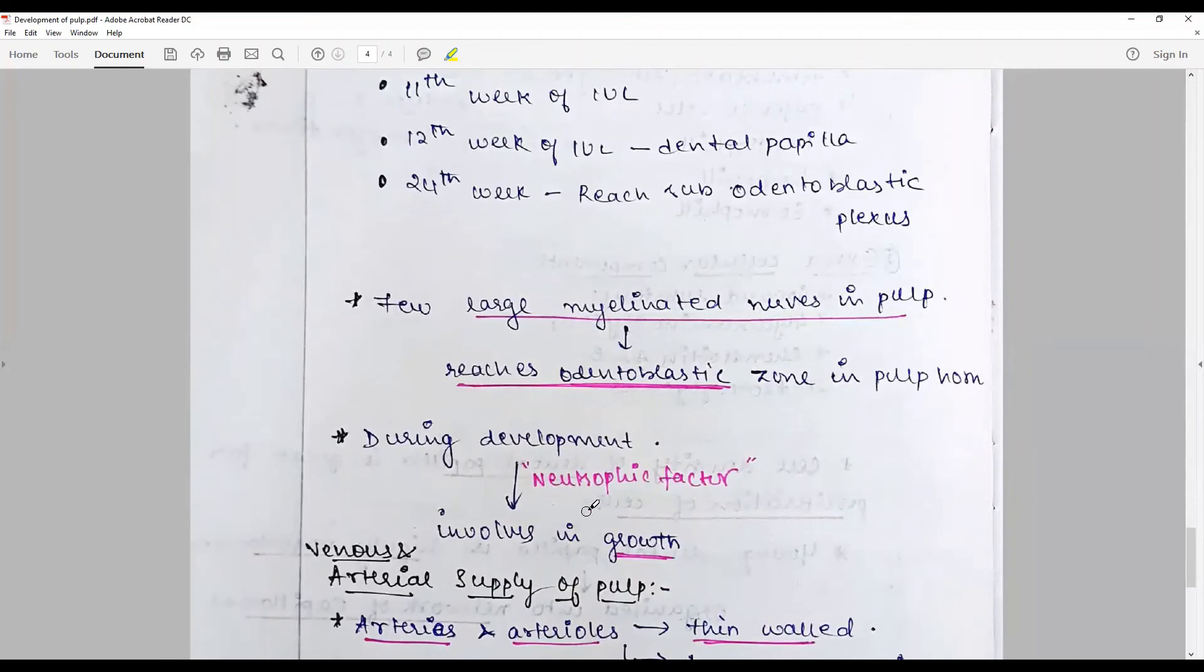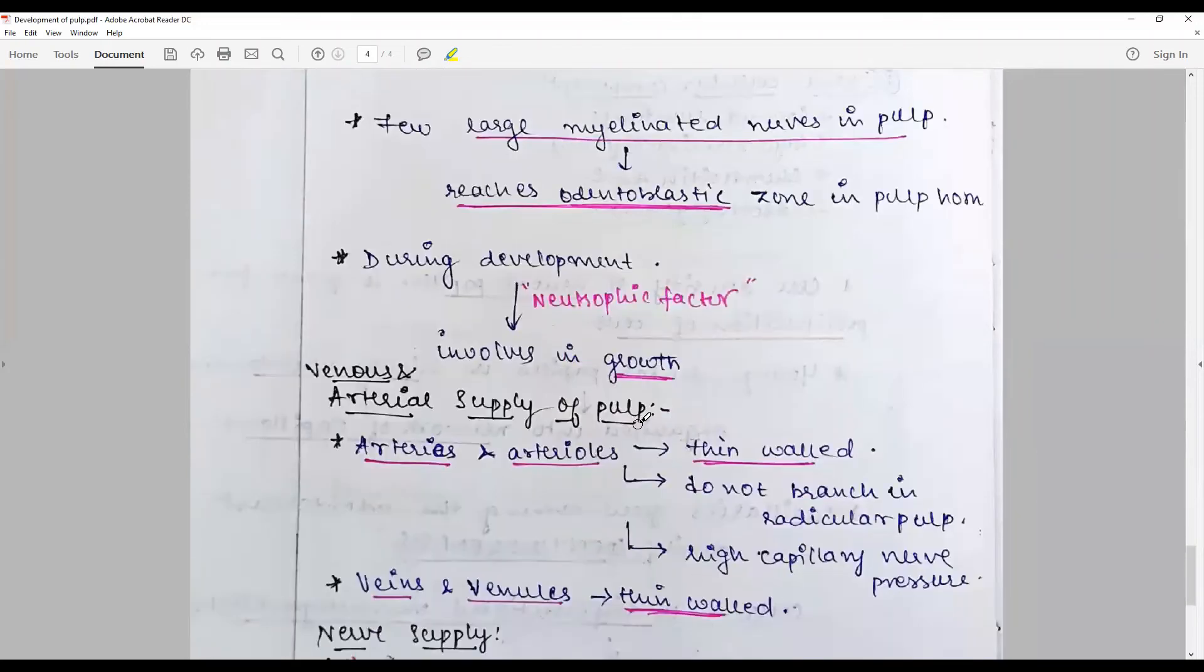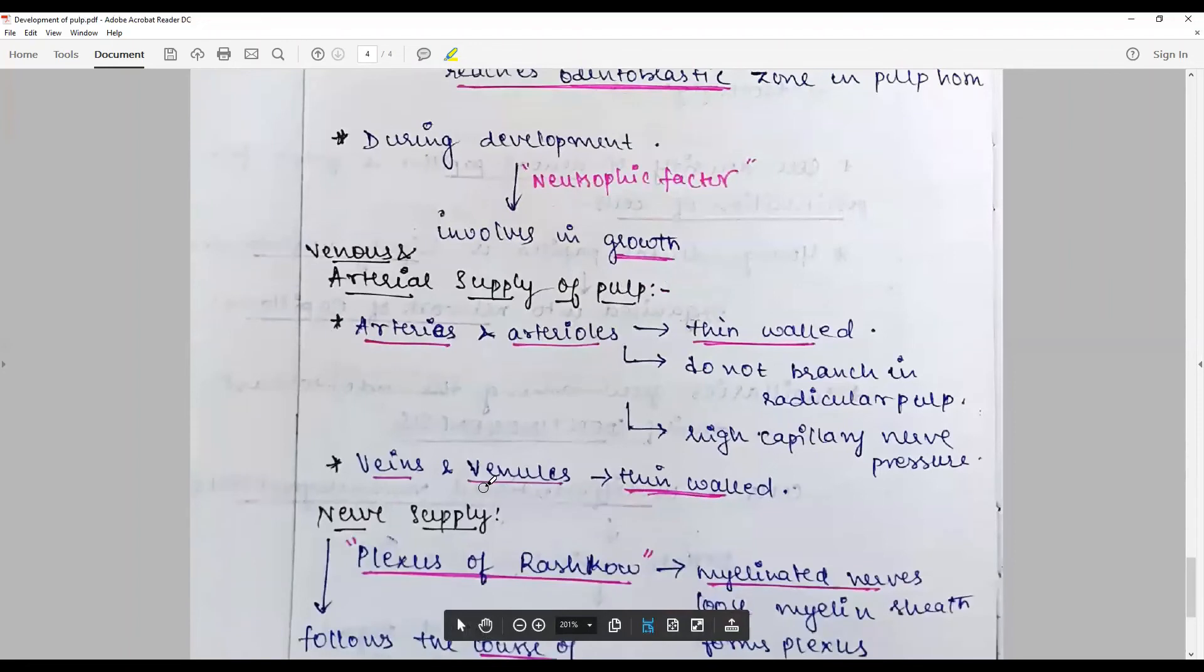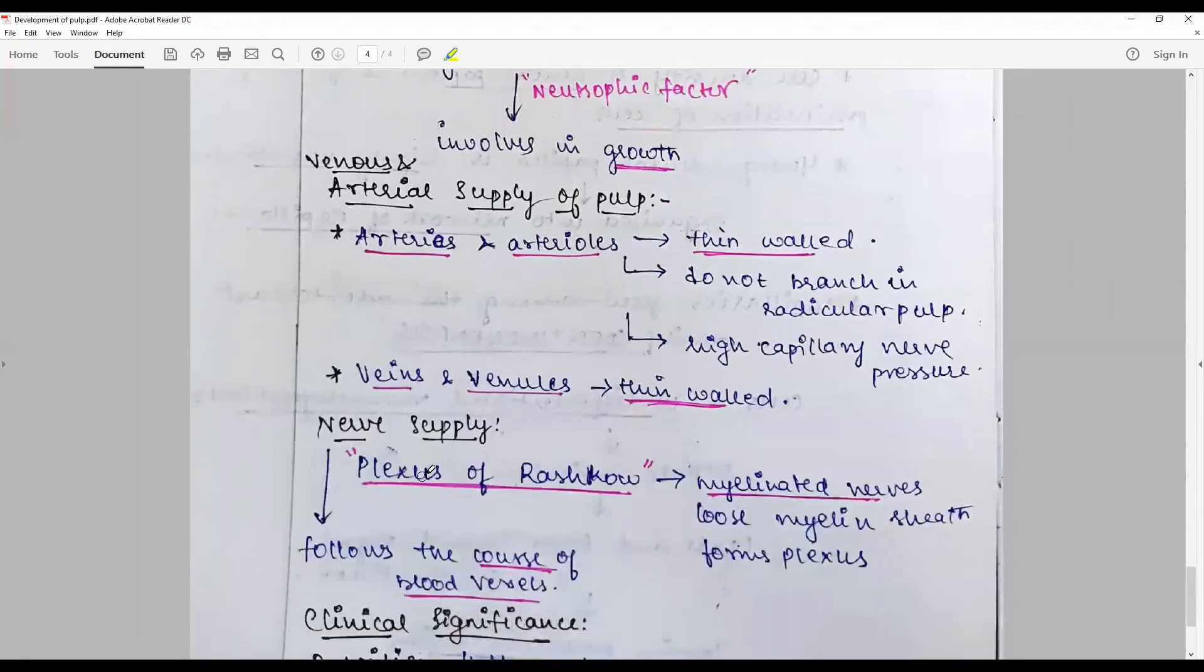A factor called neurotropic factors is involved in the growth of pulp. Venous and arterial vessels have thin walls, do not branch in the radicular part, but have high capillary nerve pressure. The veins and venules in the pulp are thin-walled. The nerve supply is predominantly through the plexus of Raschkow, which contains myelinated nerves that lose their myelin sheath to form this plexus. They follow the course of the blood vessels.